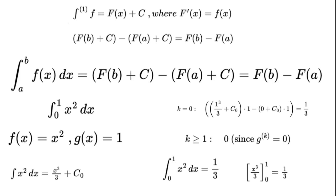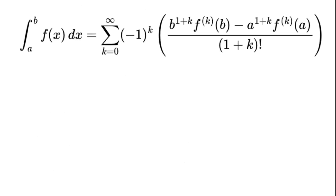Now let's explore a formula I developed that works with just one function — kind of like a shortcut for integrals. The integral from a to b of f(x) dx equals the sum from k equals 0 to infinity of negative 1 to the power of k times [b to the power of 1 plus k times f to the power of k evaluated at b minus a to the power of 1 plus k times f to the power of k evaluated at a] over (1 plus k) factorial.